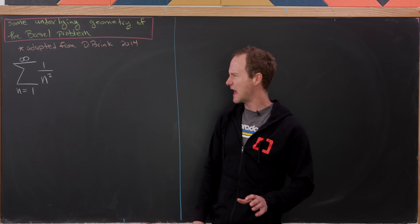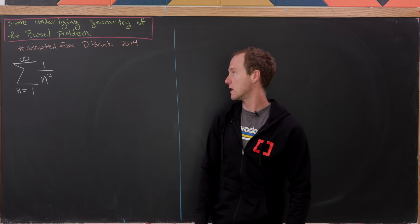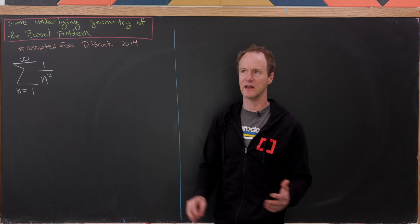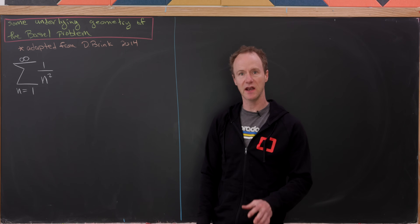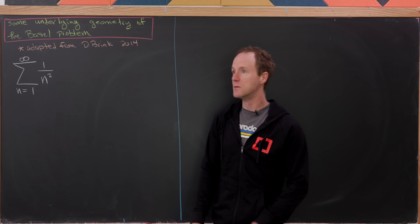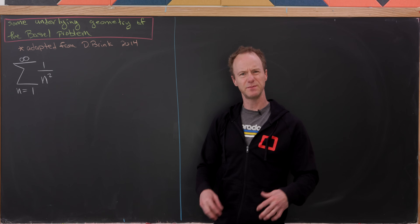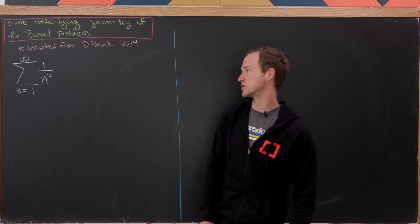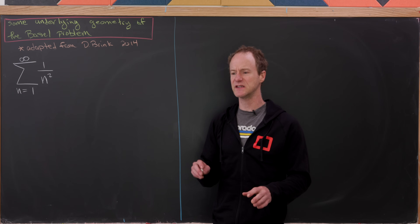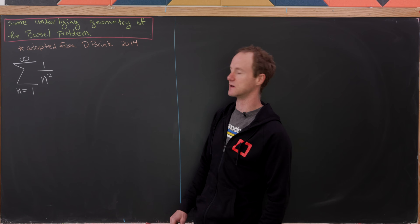Today we're going to revisit the Basel problem — the value of the sum of the reciprocal of the squares. This is a very famous problem with lots of different approaches, and I've made videos on a couple of those approaches before. Today I'd like to look at an approach that speaks to the underlying geometry of the problem, adapted from an article in Math Magazine from 2014.